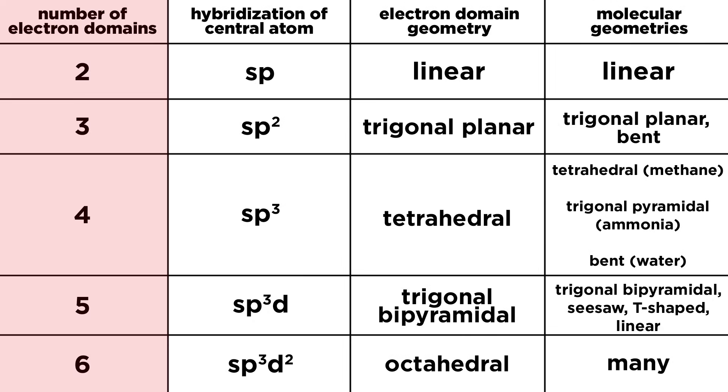So to summarize, the number of electron domains surrounding an atom, be they covalent bonds or lone pairs, determines the hybridization of the central atom. The hybridization should contain as many letters as there are electron domains.